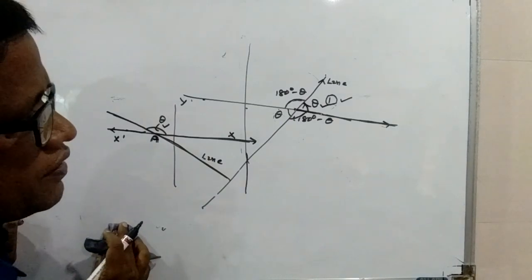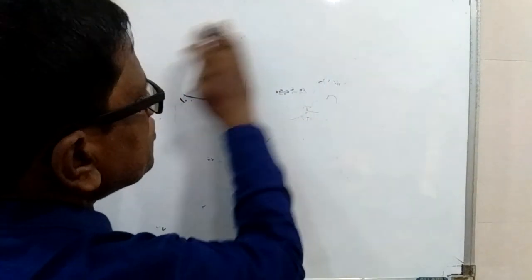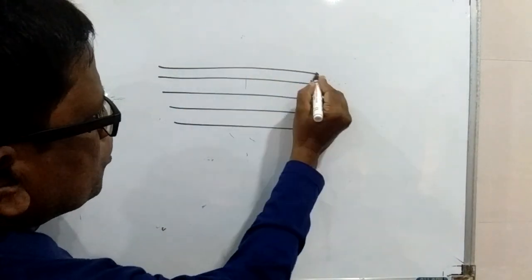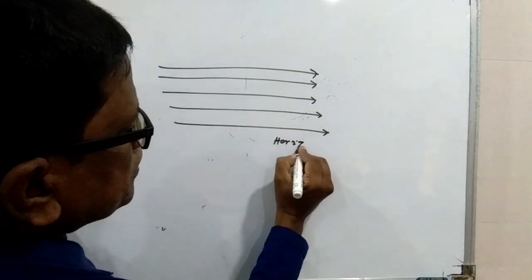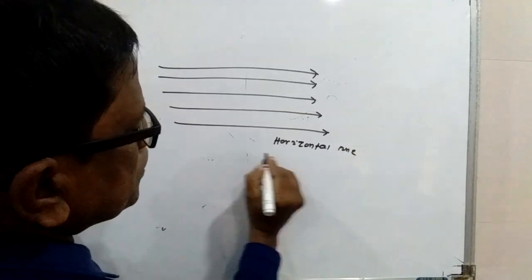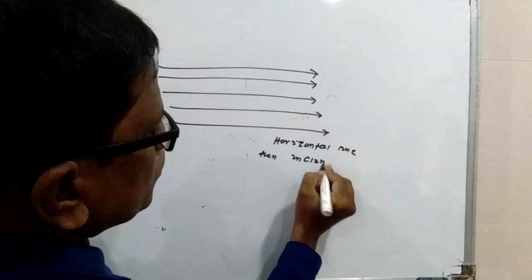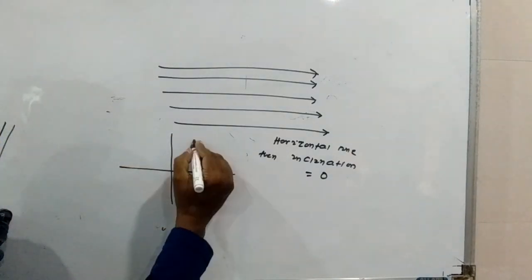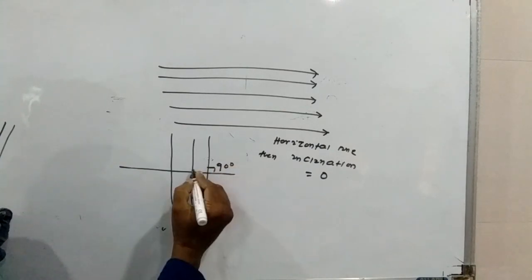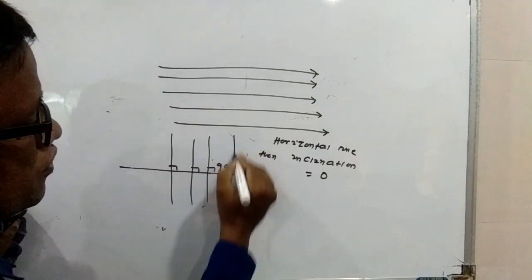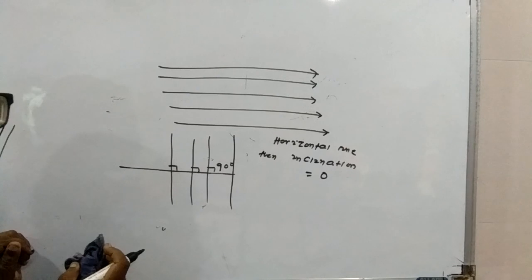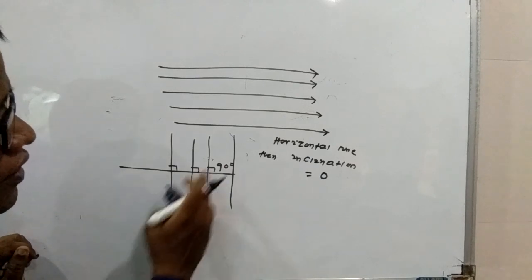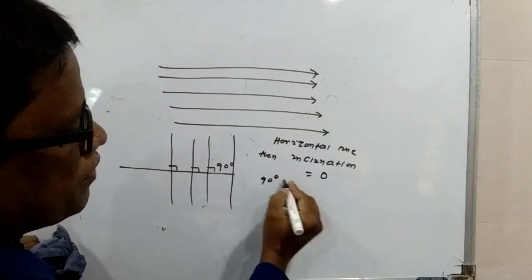The angle made by a line with positive direction of X axis in anticlockwise sense. If we are considering any line parallel to X axis — that means horizontal lines — inclination will be 0 degree or 0 radian. If any line is parallel to Y axis — that means vertical line — then inclination will be 90 degrees or π/2 radian. So this is all about inclination.